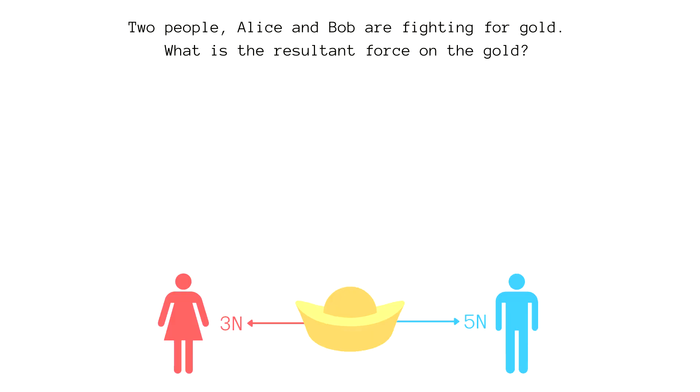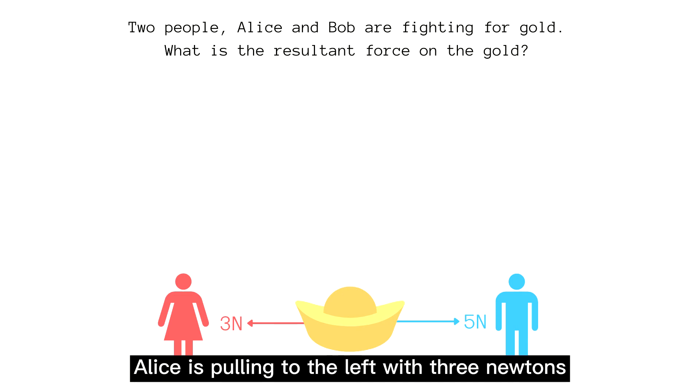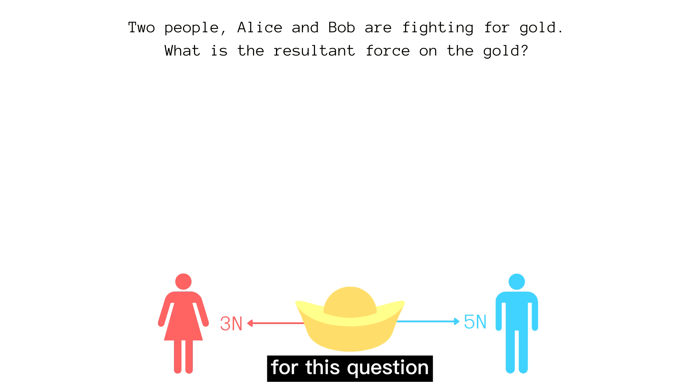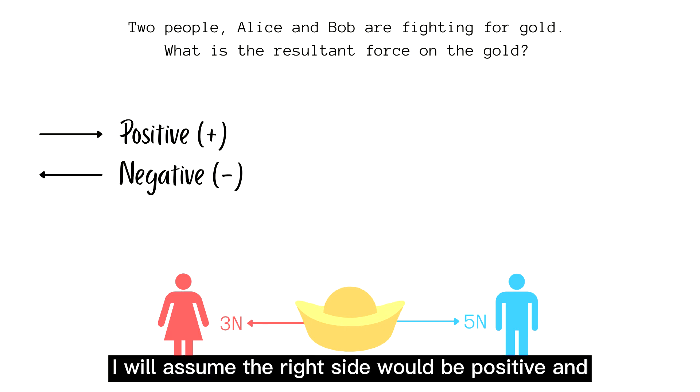Two people, Alice and Bob, are fighting for gold. What is the resultant force on the gold? So you can see here, Alice is pulling to the left with 3 Newtons and Bob is pulling to the right with 5 Newtons. For this question, I will assume the right side would be positive and any forces to the left side would be negative.